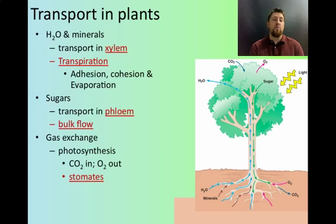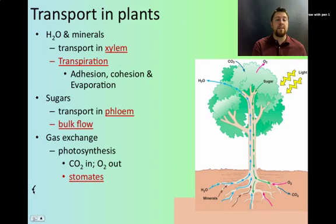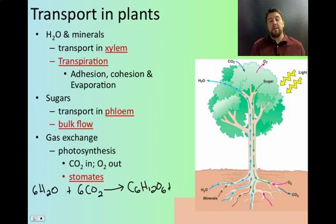Water needs to be transported, sugar needs to be transported, and gases need to be exchanged. This all goes back to photosynthesis, which is occurring mostly in the leaves. The formula for photosynthesis is that plants need water and carbon dioxide, and in the presence of sunlight, they're able to generate sugars or glucose, and they release oxygen as a byproduct.